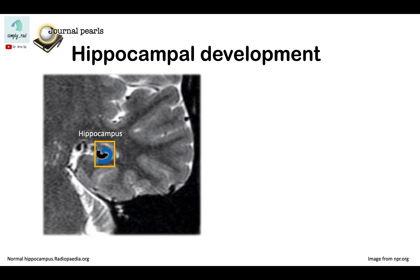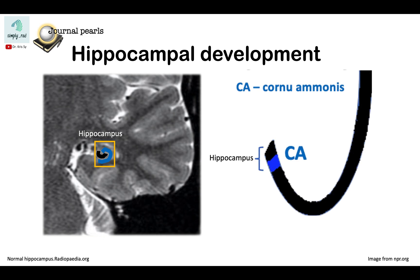Now very early in life, this dentate gyrus and cornu ammonis are lined up and are continuous with the neocortex.